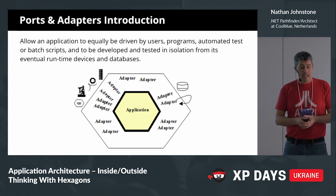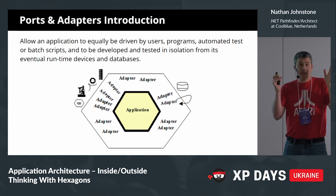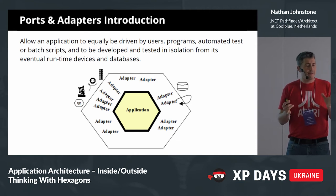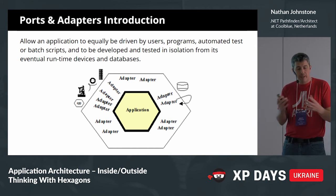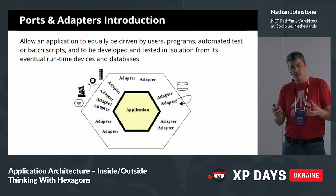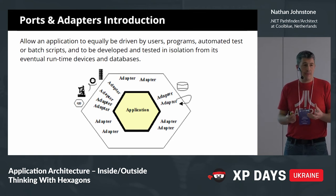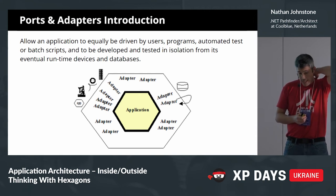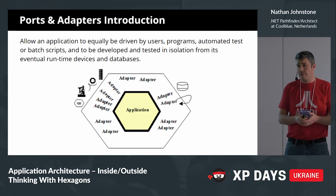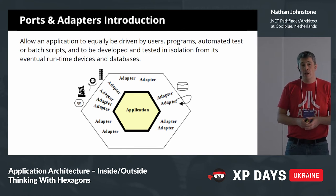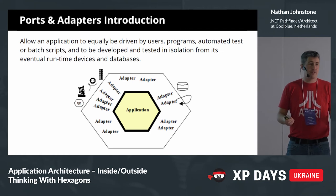This is a diagram straight off Alistair Cockburn's page. What you're striving to do is build an application core — call it domain, business logic layer, whatever — and at any point in time you can have different things driving it, different things forcing execution. You can test it in isolation from its runtime dependencies. You can swap an adapter for an in-memory dictionary — the first adapter we write when starting a project is just an in-memory dictionary for the persistence layer.